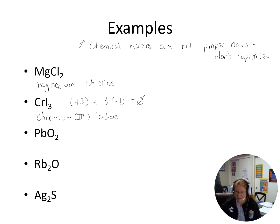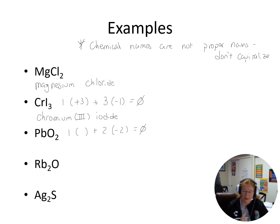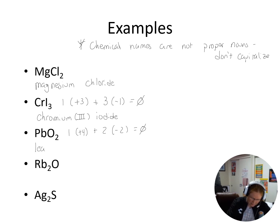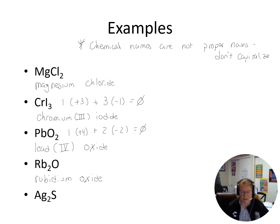Lead is below the stair-step and behaves like transition metals — it also needs a Roman numeral. In PbO₂, I have one lead and two oxides each at minus two, giving minus four total. So lead must be plus four. That's lead(IV) oxide. Rb₂O: rubidium is group 1A with a fixed charge, so no Roman numeral — it's just rubidium oxide. Silver sulfide: silver is a transition metal with a fixed charge, so no Roman numeral needed — just silver sulfide.